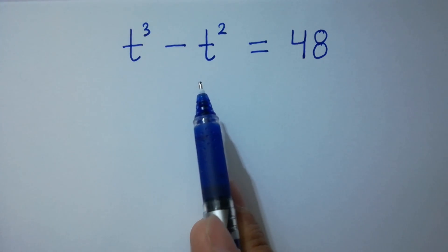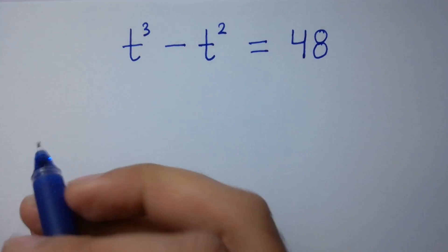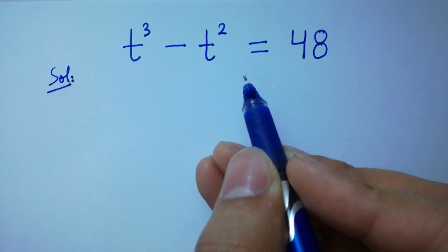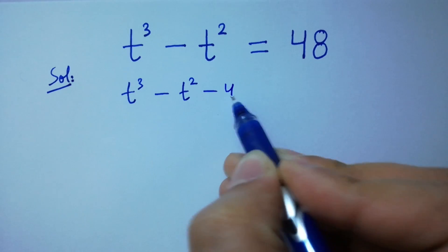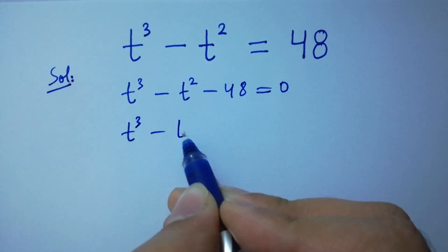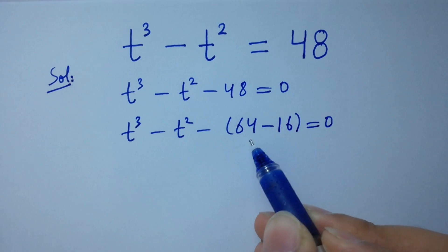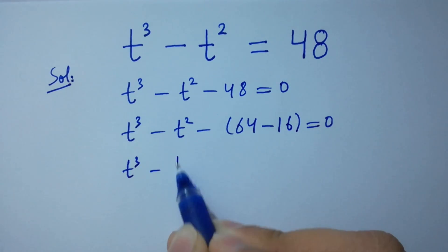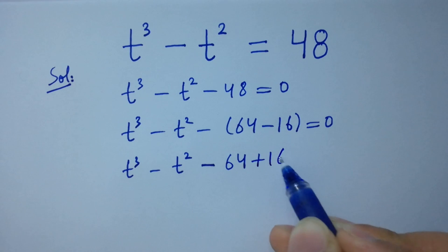Hello friends, find the value of t if t cube minus t square equals 48. t cube minus t square equals 48 can be written as t cube minus t square minus 48 equals 0, which is the same as t cube minus t square minus 64 plus 16 equals 0, since 64 minus 16 is 48.